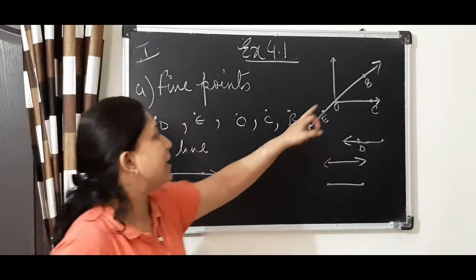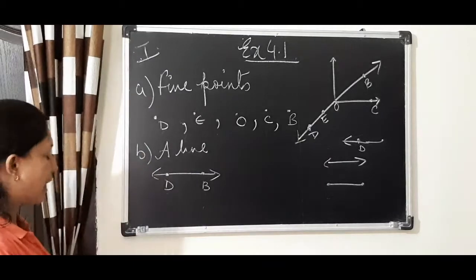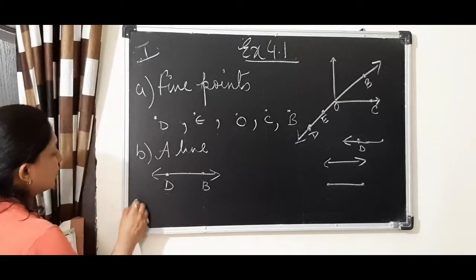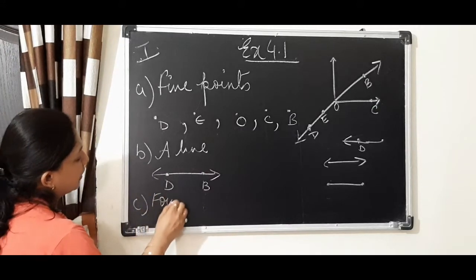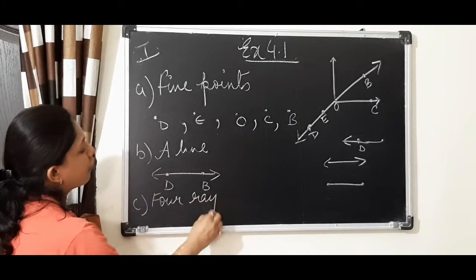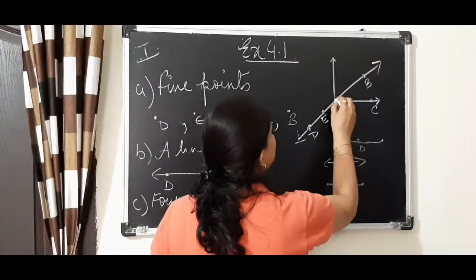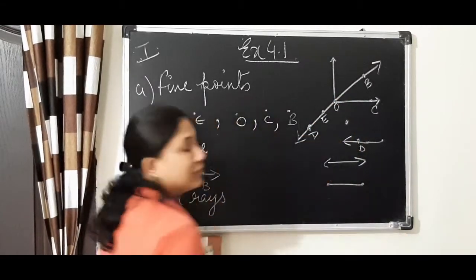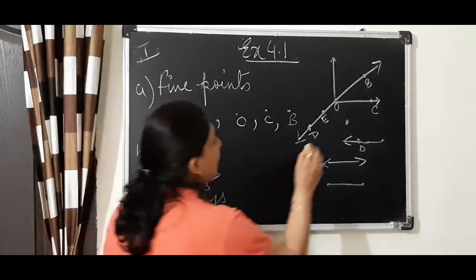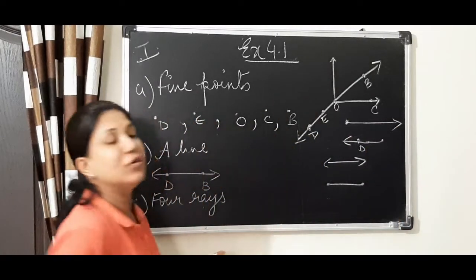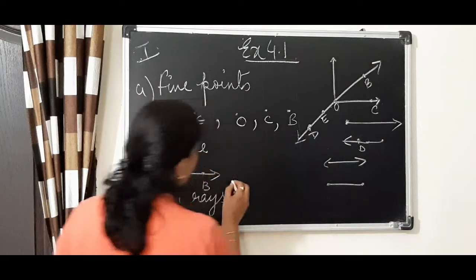This line is starting from D - I am taking line D and B. Now the third one is: you are asked to write down the names of 4 rays. A ray starts from a certain point - it has a source point and it will extend endlessly only from one side. So we can see ray OC like this.